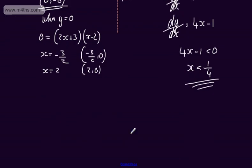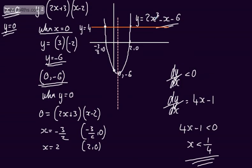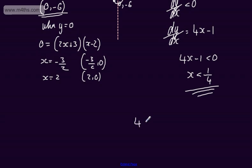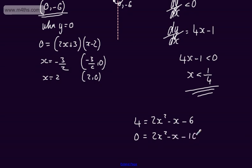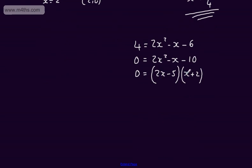So if y is equal to 4 and y is equal to 2x squared minus x minus 6, then 4 will be equal to 2x squared minus x minus 6. Subtracting the 4 from both sides, we get 0 equals 2x squared minus x minus 10. It looks like we can factor this, so we have 2x minus 5 multiplied by x plus 2. Let's check: 2x squared plus 4x minus 5x minus 10.